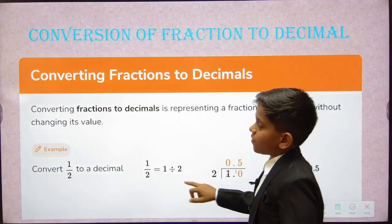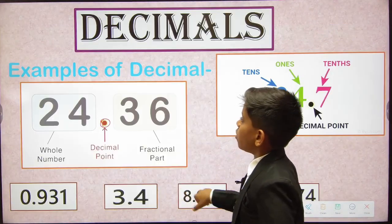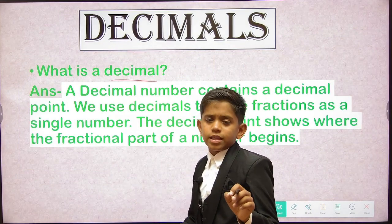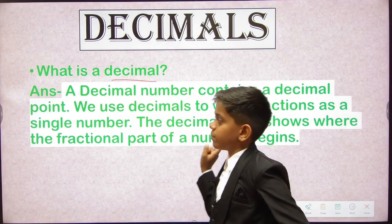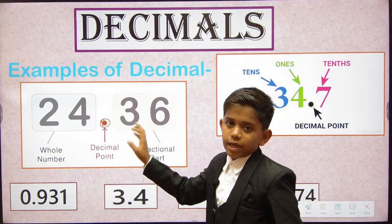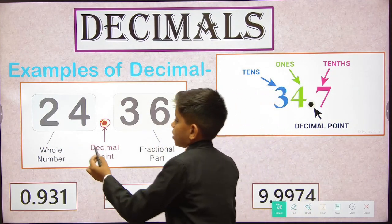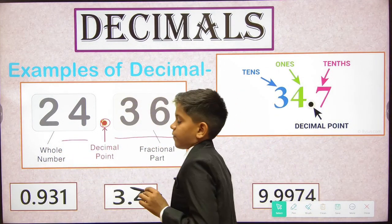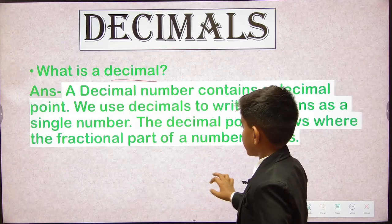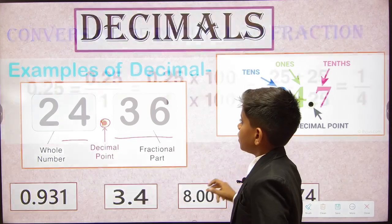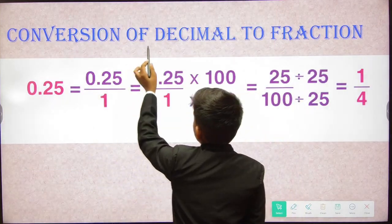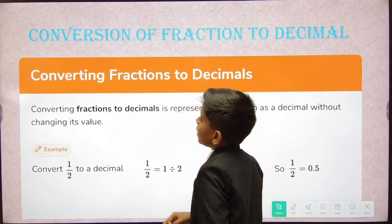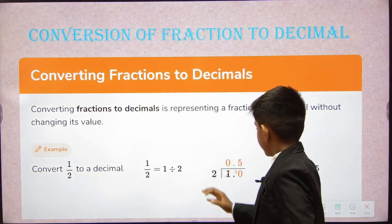Let's summarize what we learned in this video. First, a decimal is essentially a fraction written with a decimal point. We learned the examples of decimals — the part before the decimal point is the whole number and the part after is the fractional part. We also learned how to convert a decimal to a fraction and how to convert a fraction to a decimal.